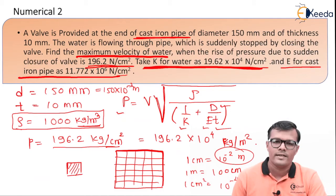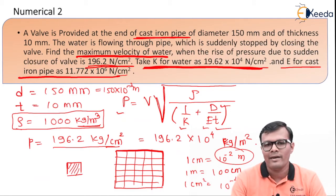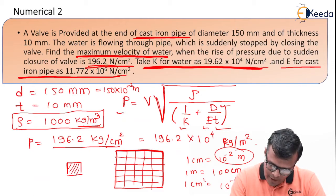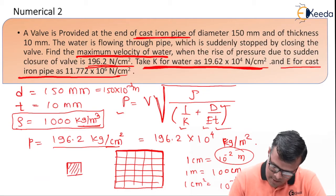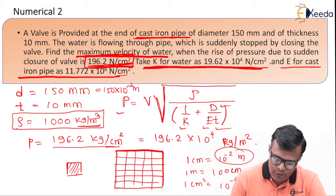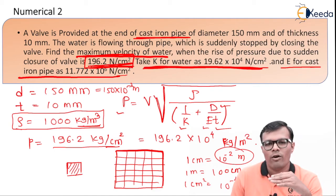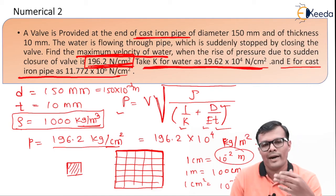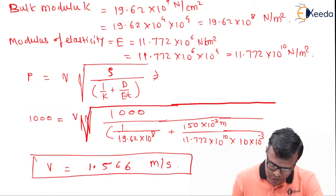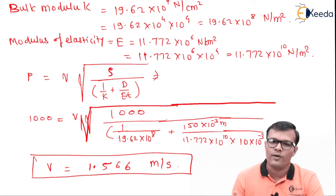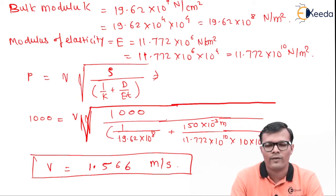Basically this problem is nothing but the limiting value of velocity for a particular operating of a valve. Say for example, if the pressure is this one, 196.2, so what should be the operating discharge or operating velocity so that the valve will remain in good condition? So that is the problem for that purpose. We are going to calculate the velocity that should be maintained. Again, this velocity corresponds to discharge.